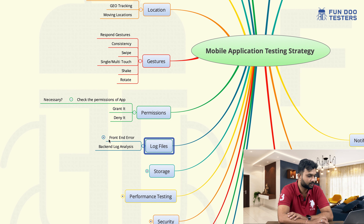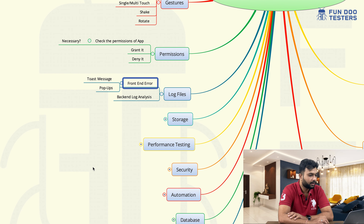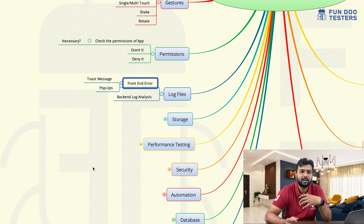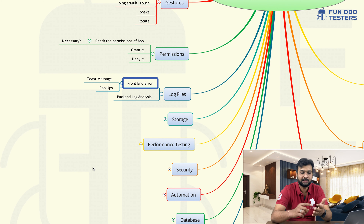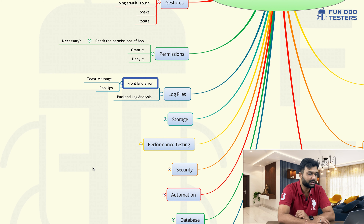Later on, log files. Log file covers front-end error and back-end log analysis. There are sometimes toast messages or pop-up messages. Whenever we are doing something wrong or missing any field, we will get a toast message — a small message that appears at the bottom of the screen. These kinds of messages and log files we need to check.